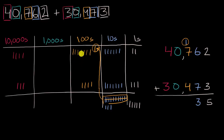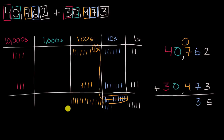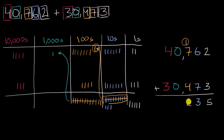Now what are we going to have in the hundreds place? We have twelve hundreds. But we don't have a digit for twelve in our traditional number system. So I can take ten of these and convert them to a thousand. One plus seven plus four is twelve — so that's two hundreds plus a thousand. We write two in the hundreds place and regroup one into the thousands place. Now in the thousands place, one plus zero plus zero is one thousand.